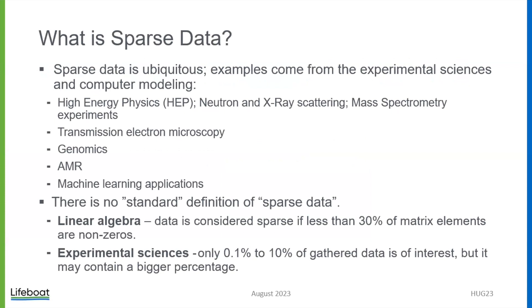So what is sparse data? Really, you cannot find a definition — it is kind of a subjective topic. First of all, it's ubiquitous. Examples come from experimental sciences and computer modeling: high energy physics, neutron and X-ray scattering. Those were our first examples of sparse data.